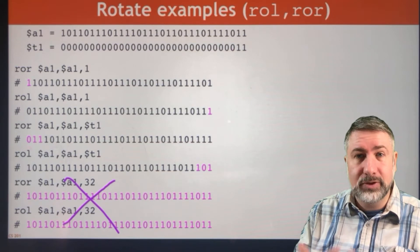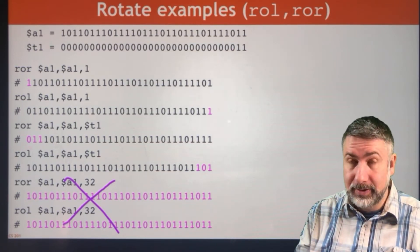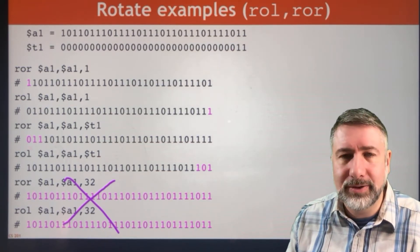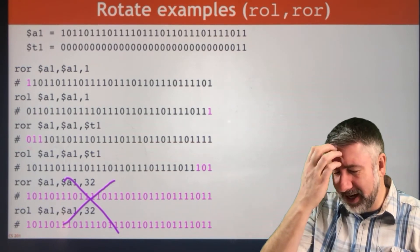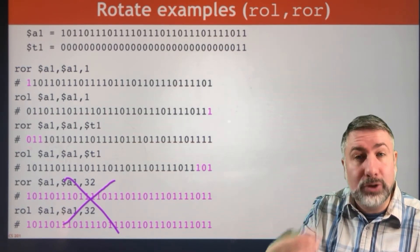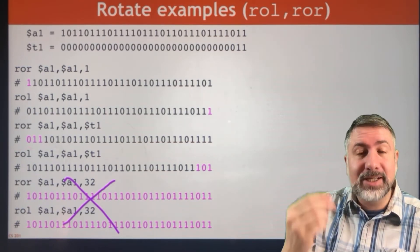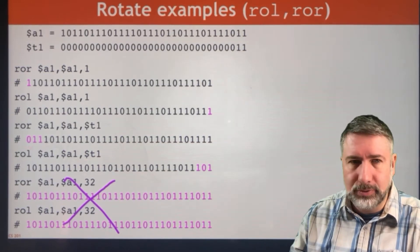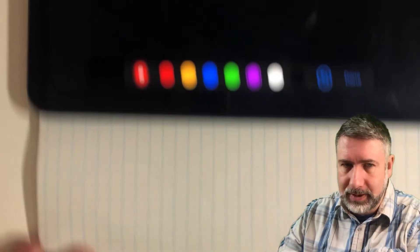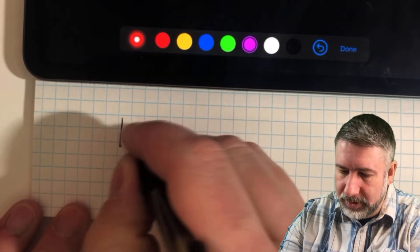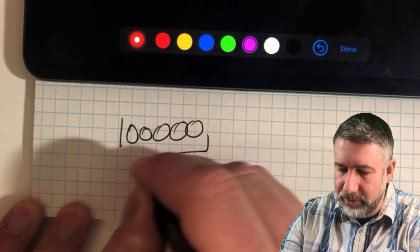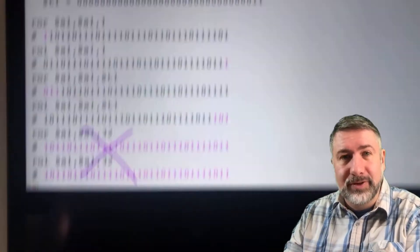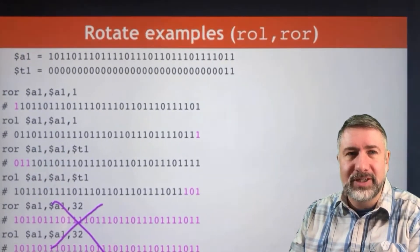A rotate by 32 is equivalent to a rotate by zero, because the number 32 looks like 1 0 0 0 0 0 in binary, and those bottom five bits are zero — so as you might expect, it's equivalent and we don't even need to implement it.